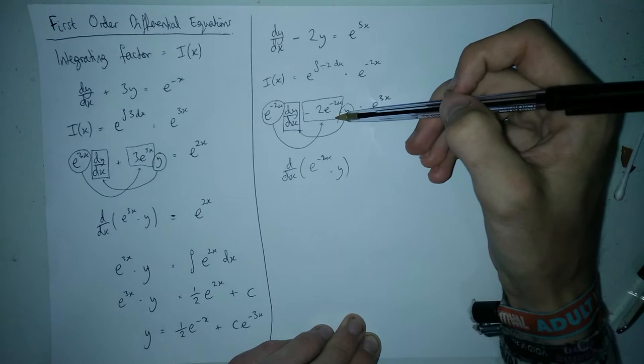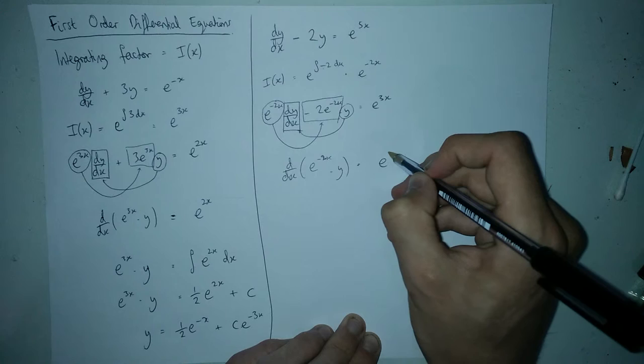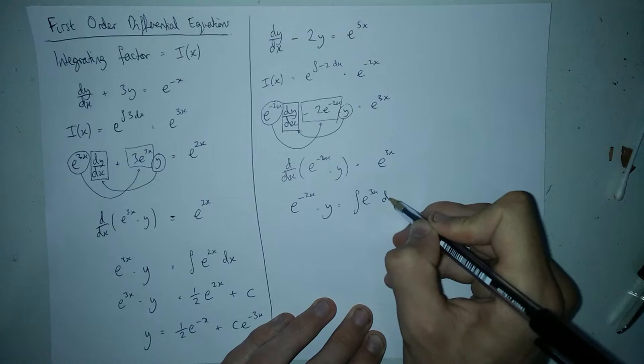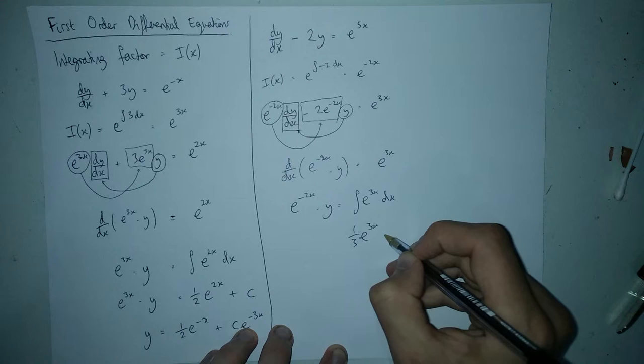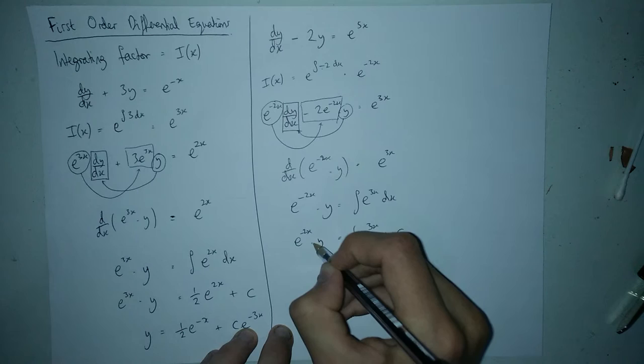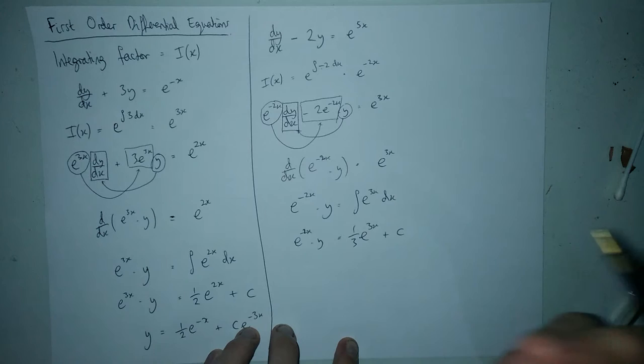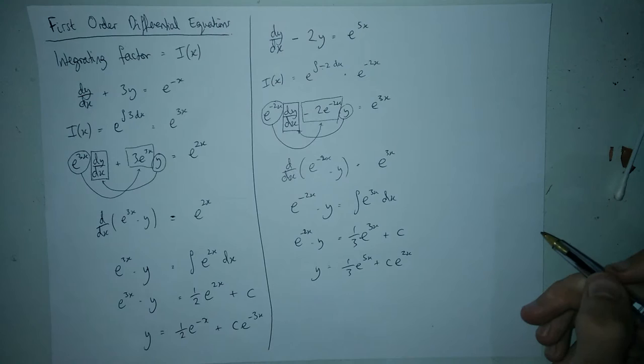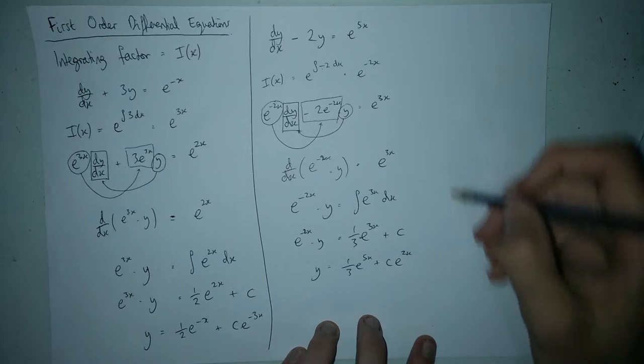We'll do all the steps today just so we can see what's going on. We can rewrite the left side as the integrating factor e to the minus two x times y — this happens every time. Integrating both sides: e to the minus two x times y equals the integral of e to the three x dx, which gives e to the three x over three plus c. To get y by itself we multiply by e to the two x, giving y equals e to the five x over three plus c e to the two x. That's the solution.